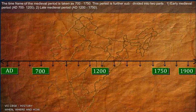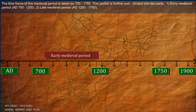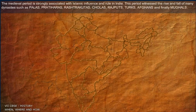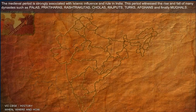The time frame of the Medieval period is taken as 700 to 1750. This period is further subdivided into two parts: 1. Early Medieval period, AD 700 to 1200, and 2. Late Medieval period, AD 1200 to 1750. The Medieval period is strongly associated with Islamic influence and rule in India.